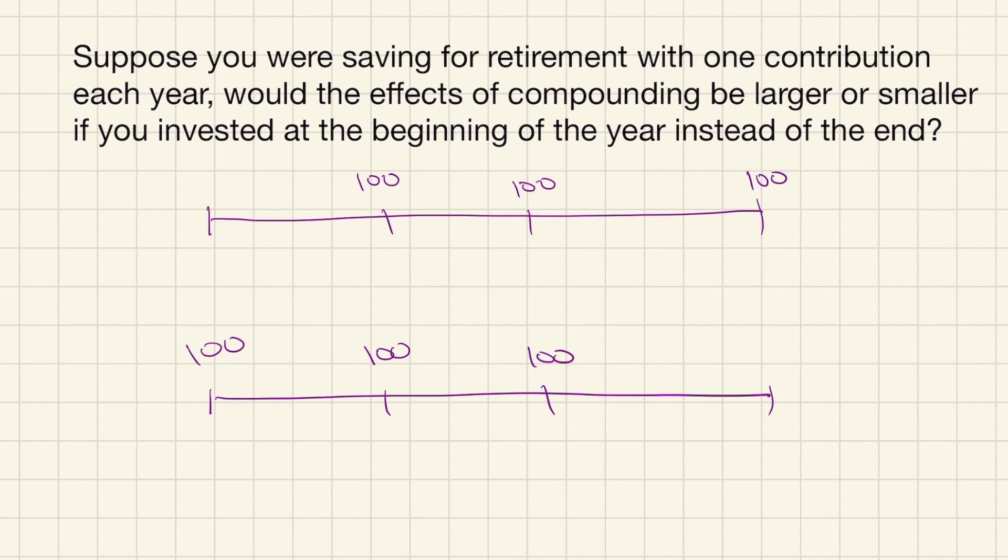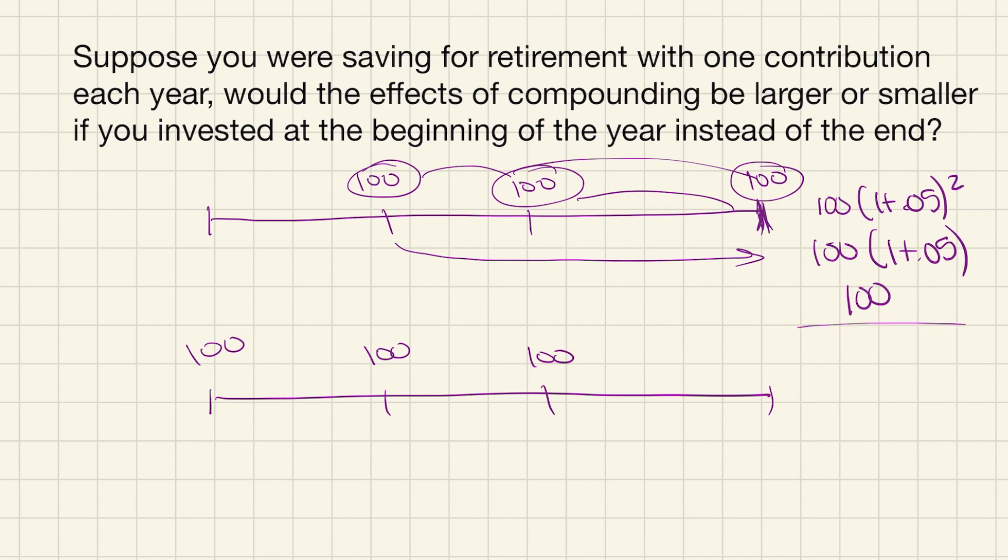Now to look at the effect of compounding, I'm going to write out each one of these cash flows individually. So my first timeline, I'm compounding this first hundred dollars two times to get to my future value. Then my next cash flow, compounding it once. My last cash flow is already in year three dollars, so I don't compound it at all. So I'd have 100 times 1 plus 0.05 squared, 100 times 1 plus 0.05, and then 100. That would be the same number that we calculated above.